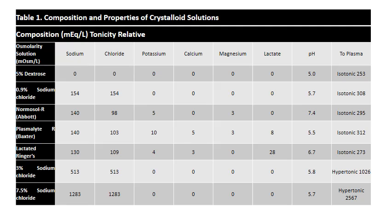This table shows the composition and properties of the crystalloid solutions we have - including osmolarity, electrolyte content, pH, and tonicity. Notably, we have isotonic crystalloids and a few concentrated hypertonic crystalloids, which are 3% sodium chloride and 7.5% sodium chloride.